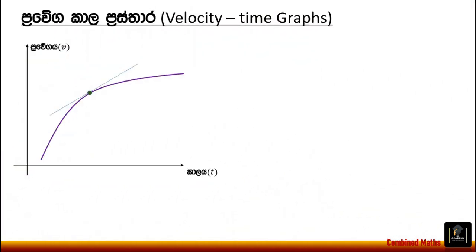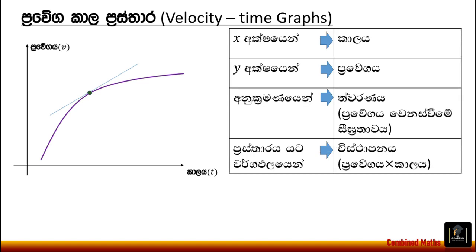Now let's take a look at the velocity-time graphs. This is the first time graph. The x-squared and y-squared terms are shown here. The y-squared terms are not involved in this part. This is the first time graph, and yx is the new y.